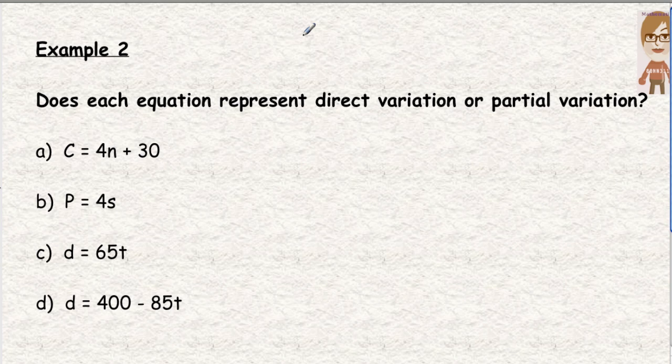Example 2, when we look at equations, can you tell which equation is representing direct variation or partial variation? In A, if C equals 4N plus 30, that line would start at 30 and go up from there. So this is partial variation. The rate is 4, 4 per day or 4 per person, $4 per person. That's a rate and 30 is the initial value.